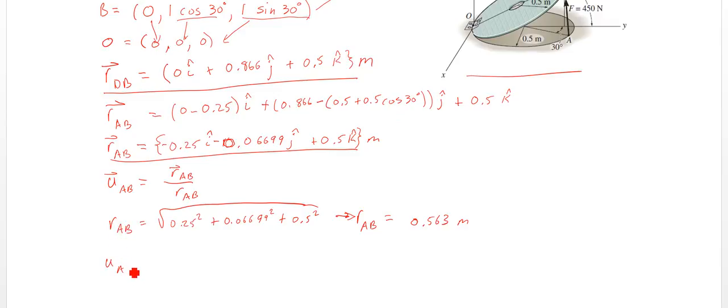So UAB, then, is going to be all of these things divided by that thing. So you're going to have negative 0.25 over 0.563I minus 0.06699 over 0.563J plus 0.5 over 0.563K. So there's our unit vector.